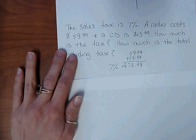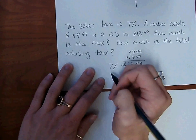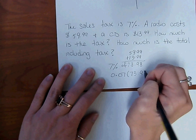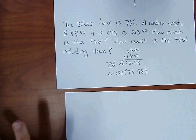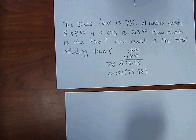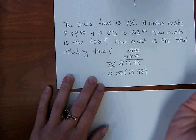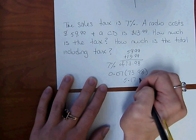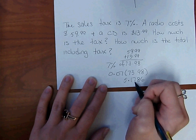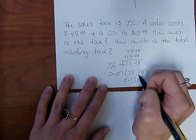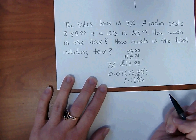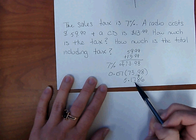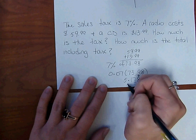We have to pay 7% of $73.98 — that's percent of a number. So change the percent into a decimal: 0.07, and multiply by $73.98. This is money, so we want to round to the nearest penny. We get 5.1786. The nearest penny is the hundredths place, so we look at the thousandths digit, which is 8, and we round the hundredths up to get $5.18.